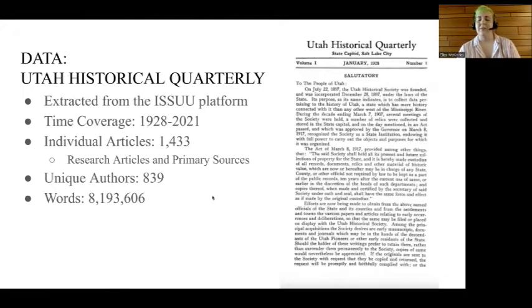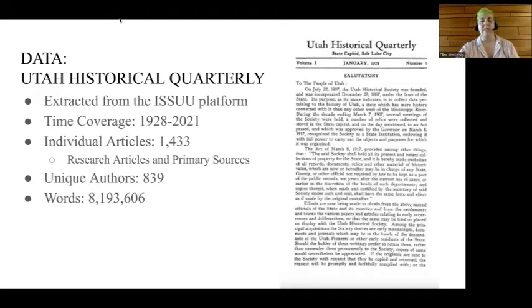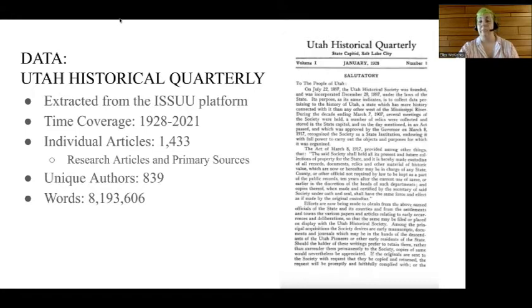We decided to look specifically at the text of the Utah Historical Quarterly. We did that by scraping all data from JSTOR, the platform UHQ uses to host its back issues, covering a time period from 1928 to 2021. We did not include book reviews — partly because of unclear authorship and subject matter, and partly because our methodology created hiccups. We focused on research articles and primary source documents like letters and diaries that UHQ periodically publishes. That ended up being 1,433 articles with 839 unique authors and a total word count of 8 million words.